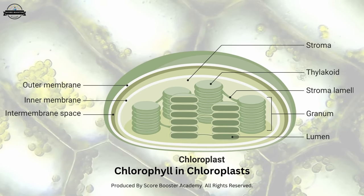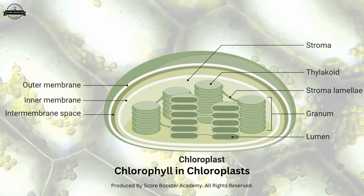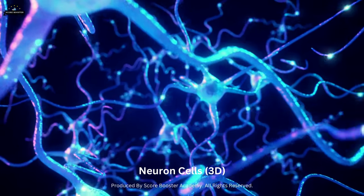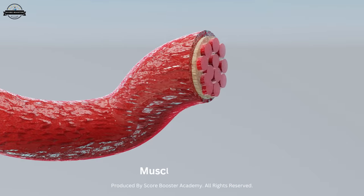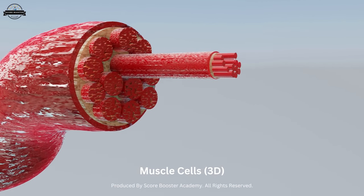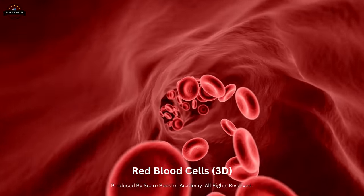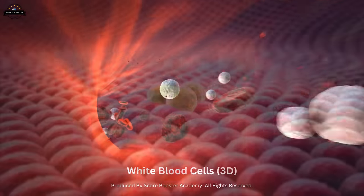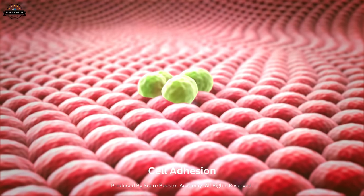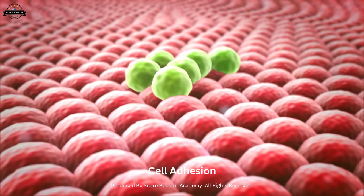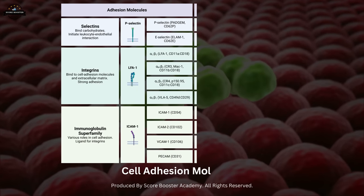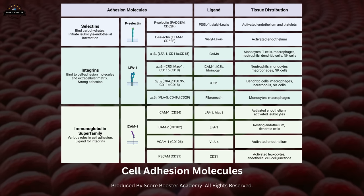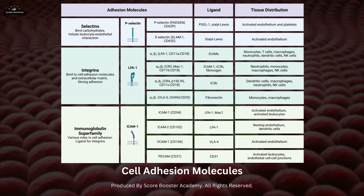Cells exhibit incredible diversity across different organisms. For example, neurons are specialized cells found in the nervous system, enabling communication and transmitting signals. Muscle cells contract and generate force, allowing movement. Red blood cells transport oxygen throughout the body, while white blood cells play a crucial role in the immune system's defense mechanisms. Cells adhere to each other and form tissue structures through specialized cell adhesion molecules and cell junctions, which are crucial for maintaining tissue integrity, cell communication, and coordinated movement.